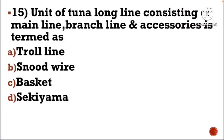Next question: Unit of tuna long line consisting of main line, branch line and accessories is termed as — Option A: troll line, Option B: snood wire, Option C: basket, Option D: sekiyama. The correct answer is Option C, basket.